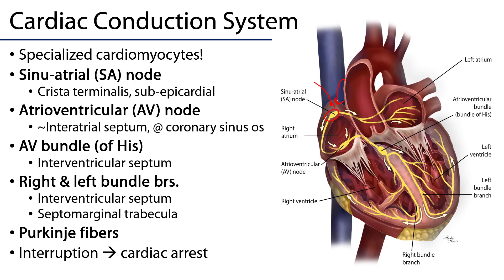From the SA node, depolarization will occur and will affect the AV node. The atrioventricular node is found at the nexus of the interatrial and atrioventricular septa, just adjacent to the opening of the coronary sinus. This is the conduit between the myocardium superior to the fibrous skeleton of the heart and the myocardium inferior to the fibrous skeleton.